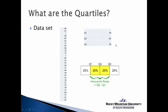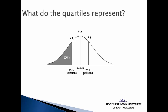Now let's look at what this might mean relative to the normal distribution, looking at the bell curve. The area under the curve represents 100% of all the scores. Here is that median score — the 50th percentile, or the second quartile — right in the middle, dividing the curve in half. Looking at our previous data, that's represented by a score of 62.